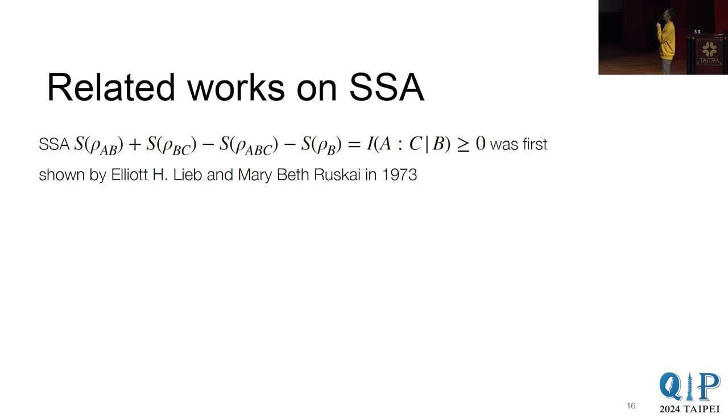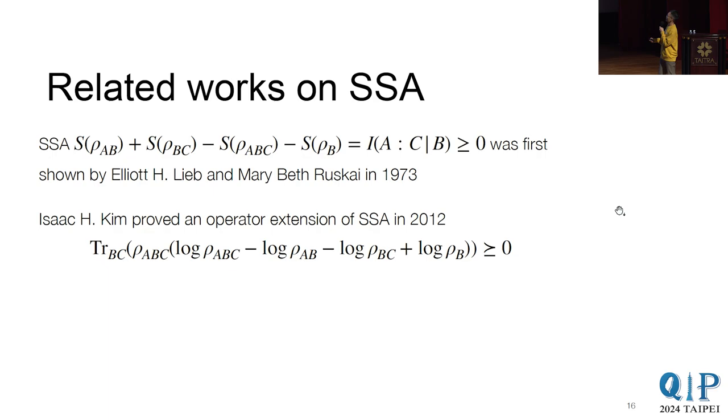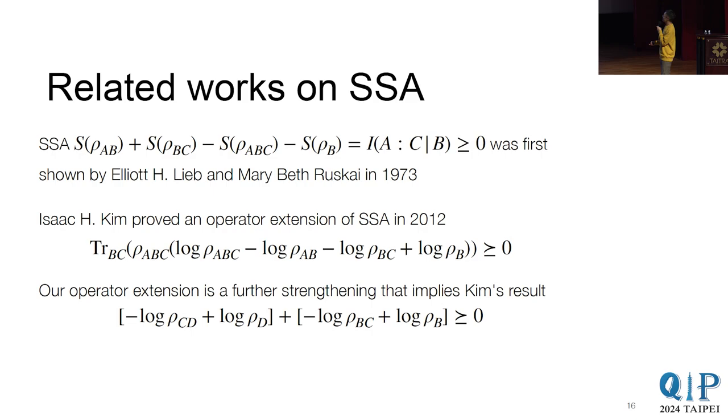And let's make some historical remarks. So the strong subadditivity, it was first proved in 1973 by Lieb and Ruskai. And there has, afterward, there are different proofs and also different generalizations. And one such generalization is this operator extension. So Kim has actually already explored a possible operator generalization in 2012. And this is what he has. So here you can see that the trace doesn't trace over ABC. There's still this A. So this is an operator over A.